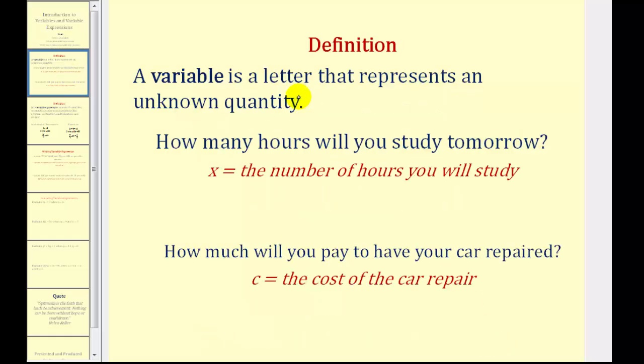A variable is a letter that represents an unknown quantity. For example, if I ask you how many hours you will study tomorrow, this would be an unknown quantity, so we could assign the variable x to equal the number of hours you will study tomorrow.